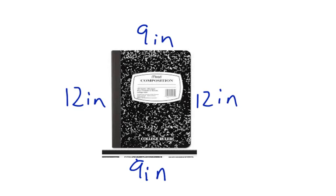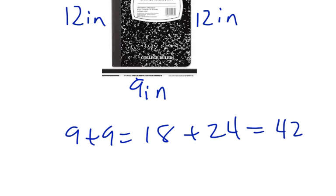The only thing we do is we add the sides. 9 plus 9 equals 18 plus 24. And that is going to be 42 inches.